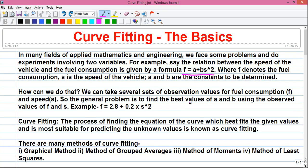So how can we do that? We can take several sets of observation values for fuel consumption f and speed s. So the general problem is to find out the best values of a and b using the observed values of f and s. For example, f equals 2.8 plus 0.2 times s square where a is 2.8 and b equals 0.2.